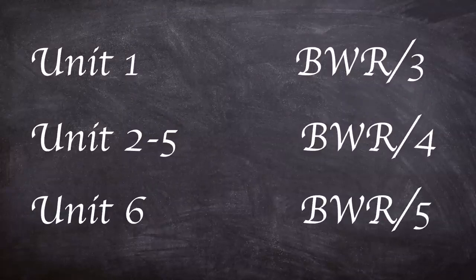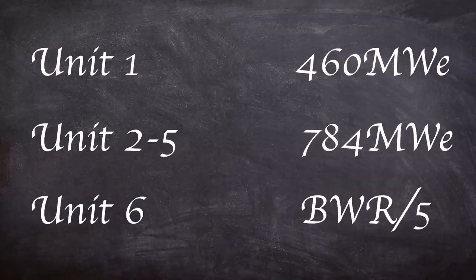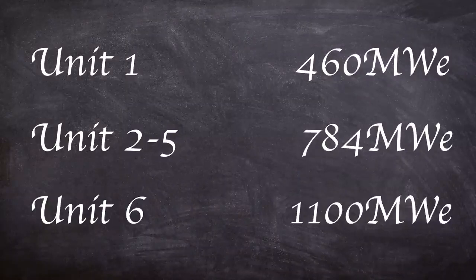Because of this, the power outputs of the three designs were different with Unit 1 having 460 megawatts of electricity, Units 2 to 5 having 784 megawatts of electricity, and Unit 6 having 1100 megawatts of electricity.